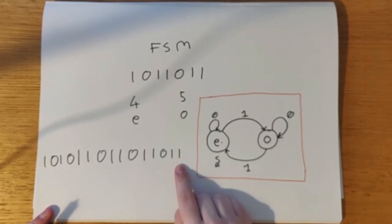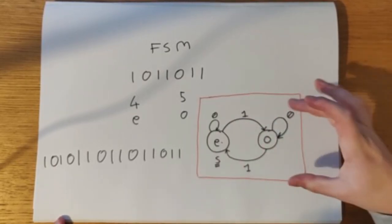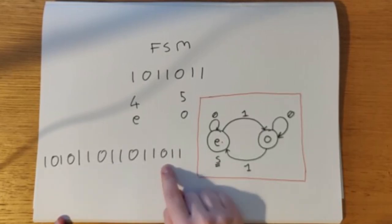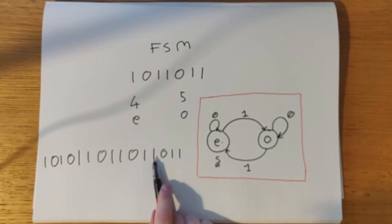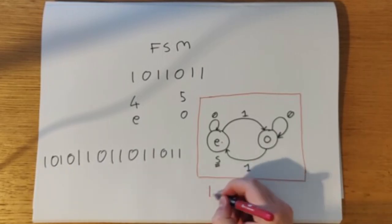And I haven't counted, I don't actually know how many ones or zeros are in here, but I can guarantee you now because we followed this machine, this computer that we've just built, that this will have an even number of ones in it. And we can count it so we've got 1, 2, 3, 4, 5, 6, 7, 8, 9, 10.